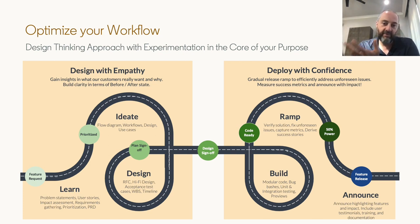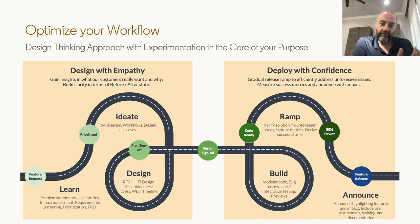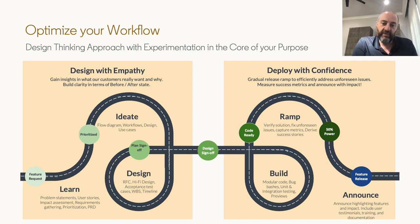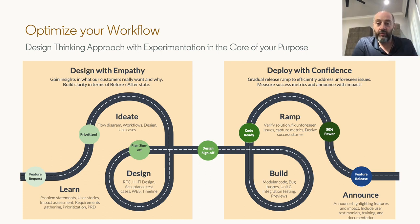The workflow has two main phases. First, Designing with Empathy — where we gain insights into what our customers really want and why, build clarity around the before and after experience, and define our OKRs. Second, Deploy with Confidence — where we gradually release and ramp through percentage ramping to efficiently address unforeseen issues. We measure success metrics and OKR key results, and when we announce, we announce with impact — not just listing cool features, but addressing the 'so what' question by focusing on the impact made, together with testimonials and user feedback.